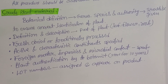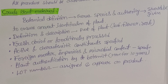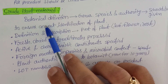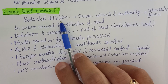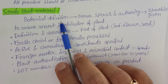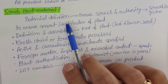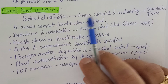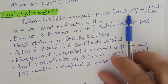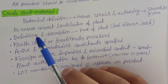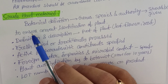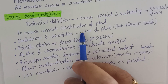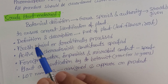For crude plant materials — root, stem, fruit, flower, bark, extract — a botanical definition must be provided. This includes the genus and species, such as Terminalia chebula, Glycyrrhiza glabra, Eugenia caryophyllus, or Vinca rosea, along with the authority. Correct identification of the plant is very important to ensure quality.